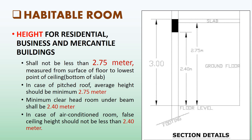In the case of air-conditioned rooms, a height of not less than 2.4 meters, measured from the surface of the floor to the lowest point of the air conditioning duct or the false ceiling, shall be provided.